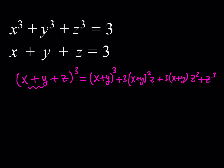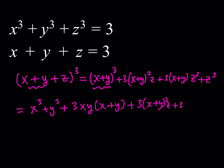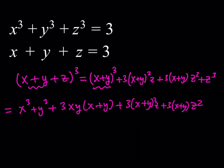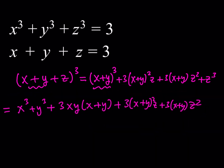Now we want to write it in a smarter way. Let's expand this a little bit: x³ plus y³, and then the two middle terms I'll write as 3xy(x + y), plus 3(x + y)²·z plus 3(x + y)·z². I'd like to bring the z³ term to the front.